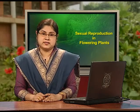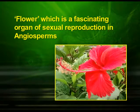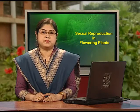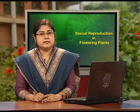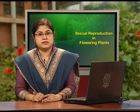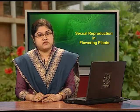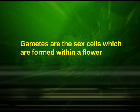We will discuss about flower, which is a fascinating organ of sexual reproduction in angiosperms. The process of producing new individuals by the fusion of male and female gametes is called sexual reproduction. It is supposed to be an advanced stage in the life history of a plant. Gametes are the sex cells which are formed within a flower.